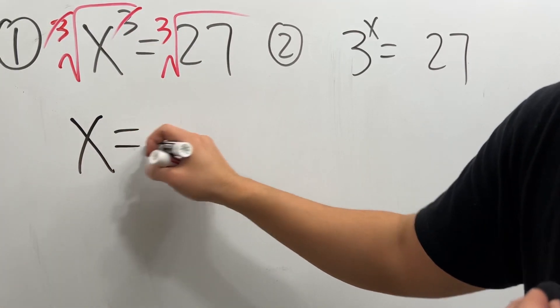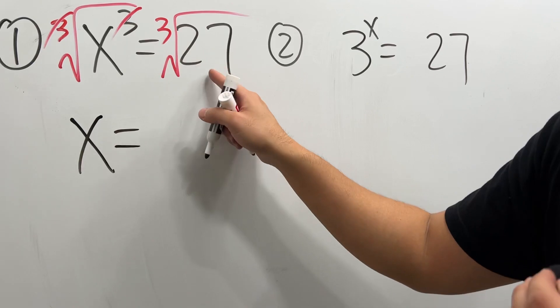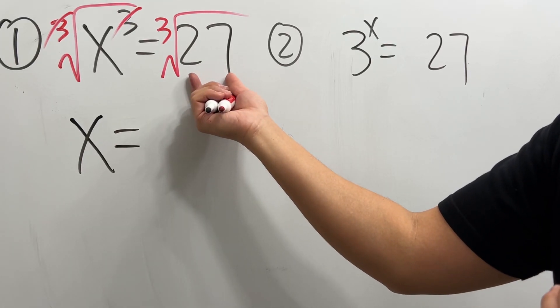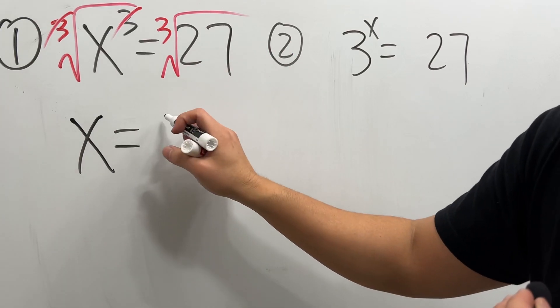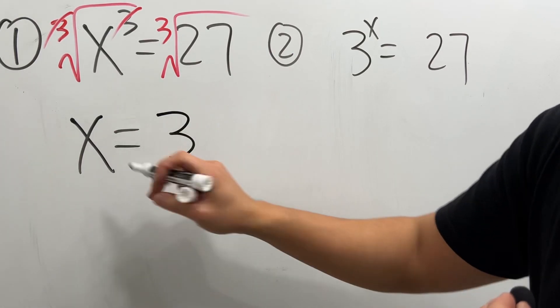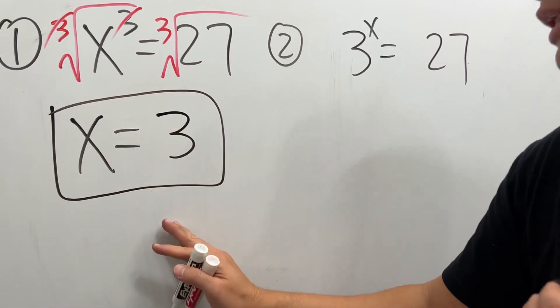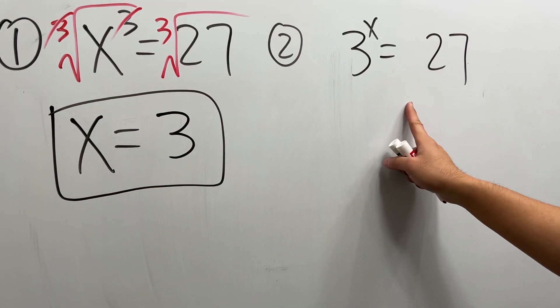We'll just get x is equal to cube root. You have to ask yourself what times what times what, and they have to be the same number to get 27. The answer for that is 3 because 3 times 3 times 3 is equal to 27. So that's it.